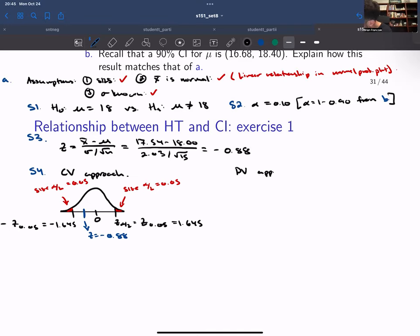If we take the p value approach, what I'm going to do here is mark down where my test statistic is. Then I'm also going to mark down the same value but on the positive side, so I'll have z 0.88. Because it's a two tail test, this means that my p value is going to be the total of both of these areas. So the p value is the sum of these two parts.